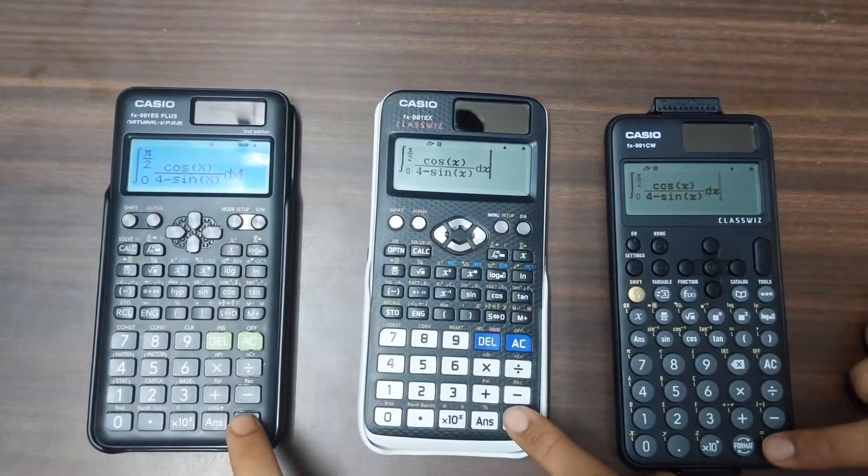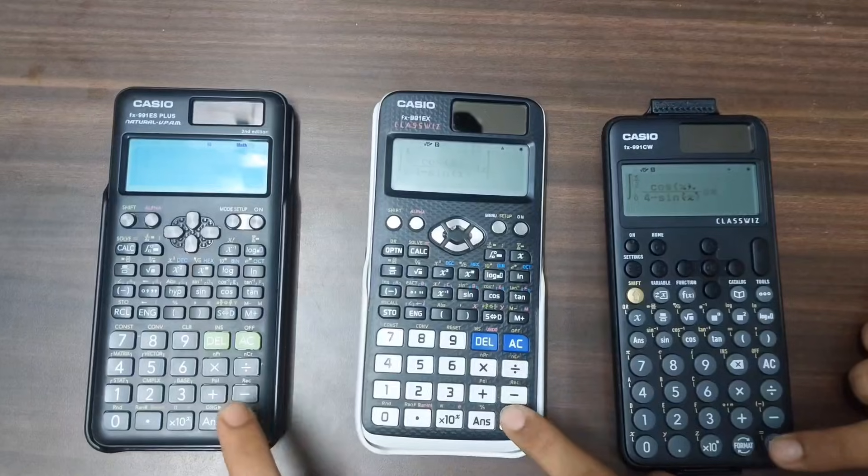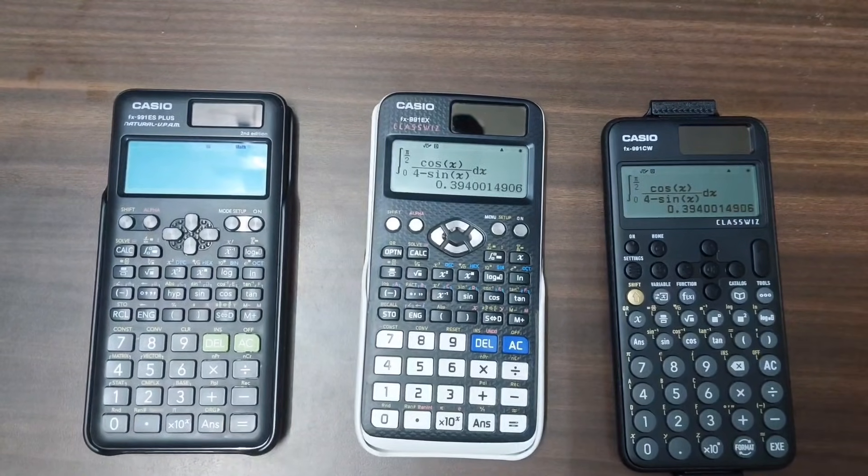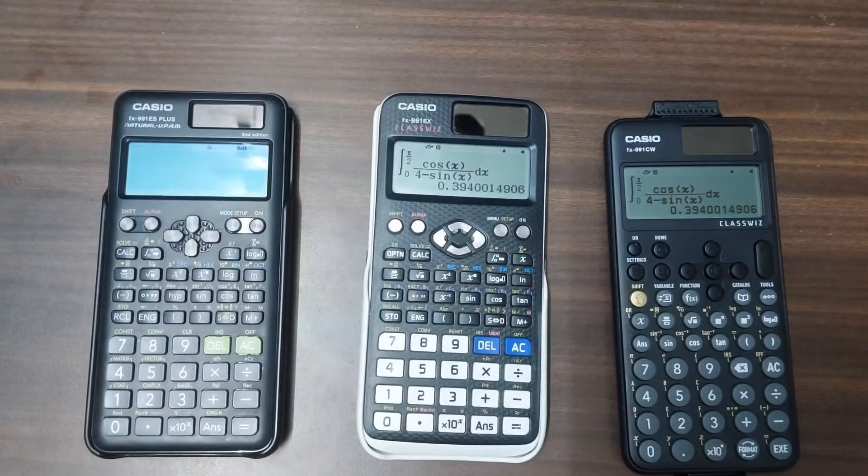As you can see in this video, the FX991ES Plus performed the worst out of these three calculators, while the FX991CW leads in the speed test.